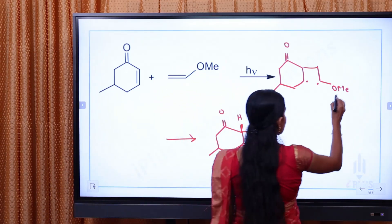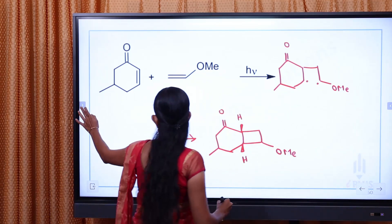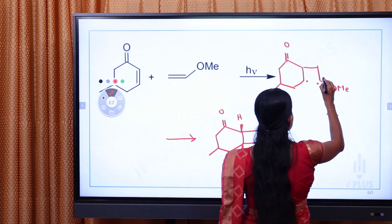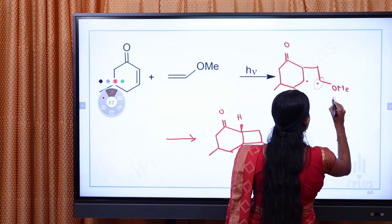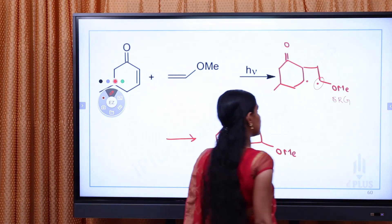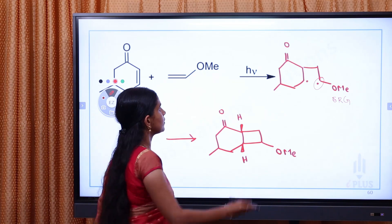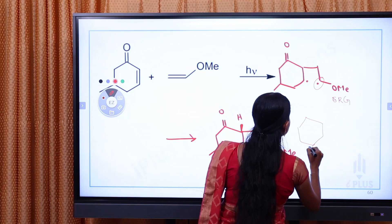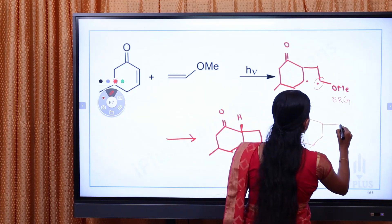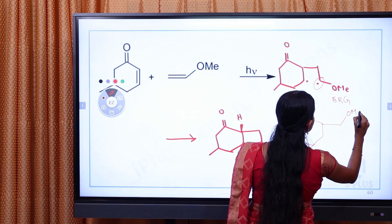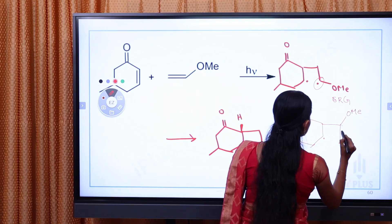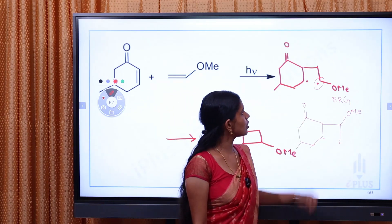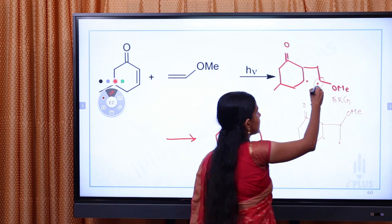We call it radical stability. This is a radical. If you want to release the electron, it will be stable. Then we will do the radical form. Double bond. Here is OME. This is our radical. Here is primary free radical. This primary free radical is more stable. Here is secondary free radical.